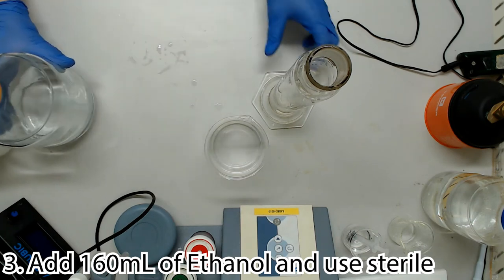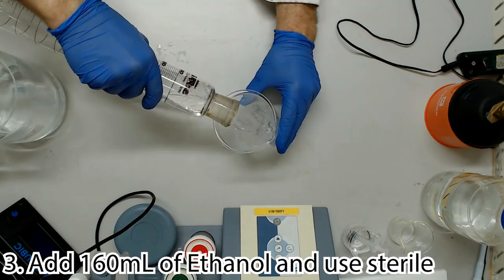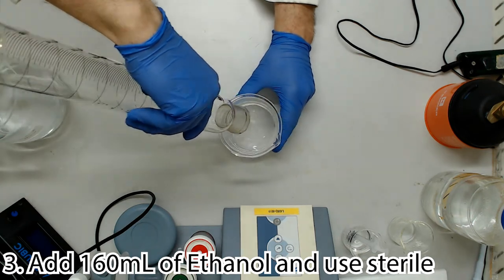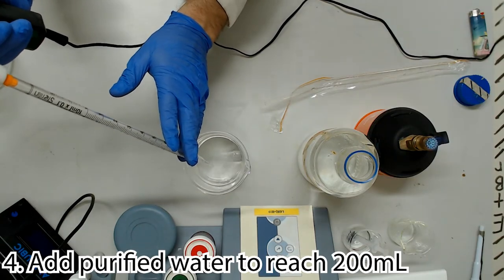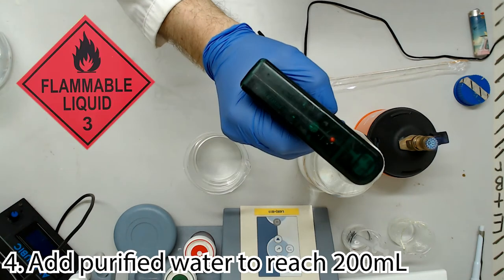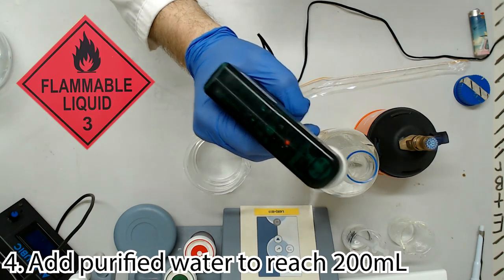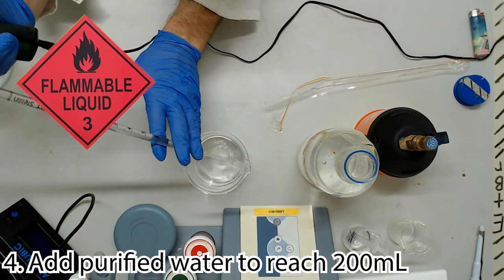As long as you didn't dilute your acid too far, your total volume should now be just under the 200 mL mark. Use sterile purified water to bring the volume up to the 200 mL mark on the beaker. Do not autoclave this buffer, it does not need sterilisation and will catch fire.